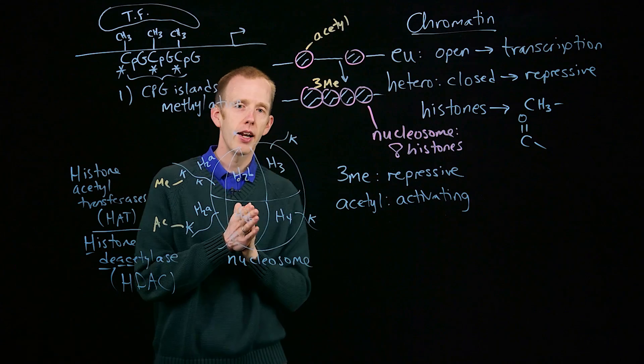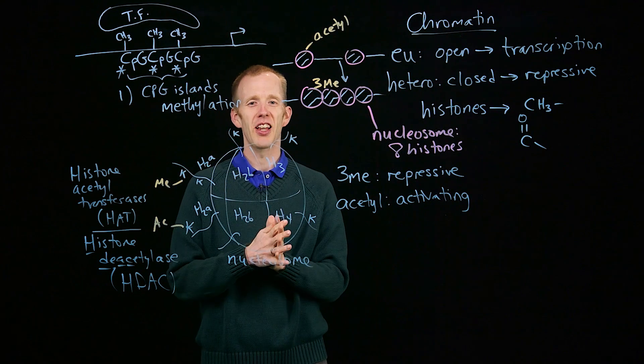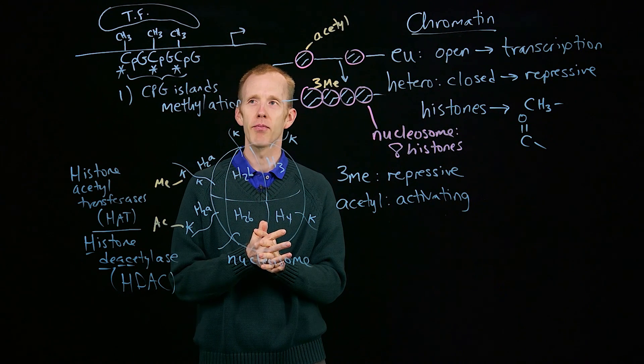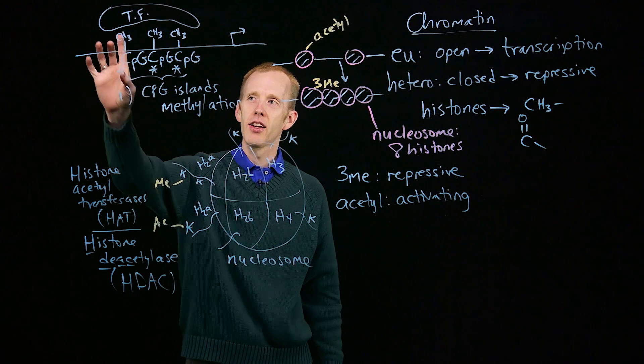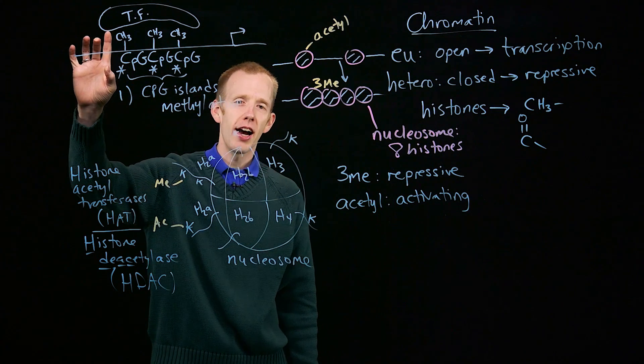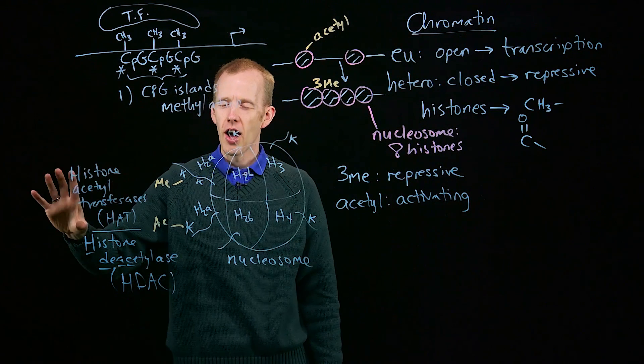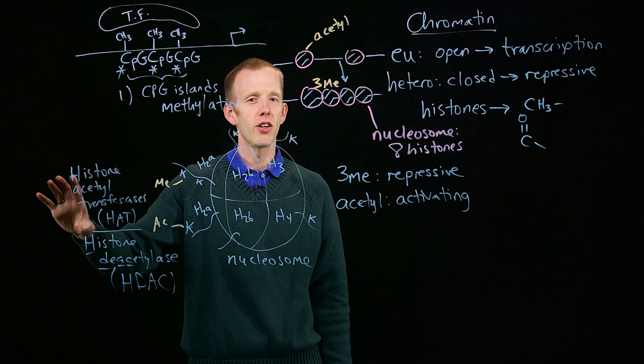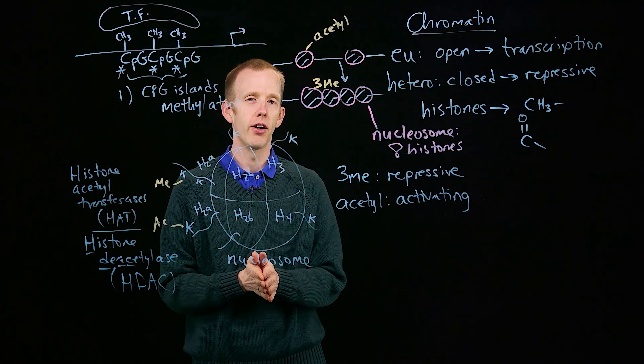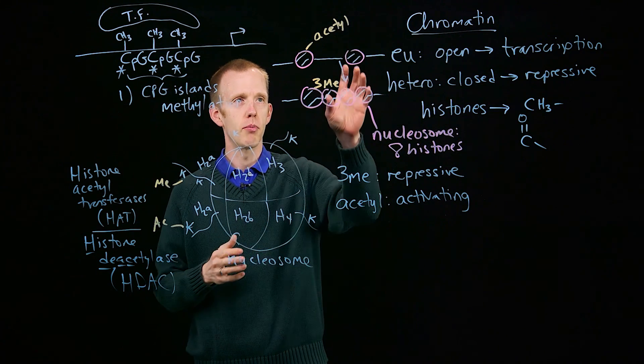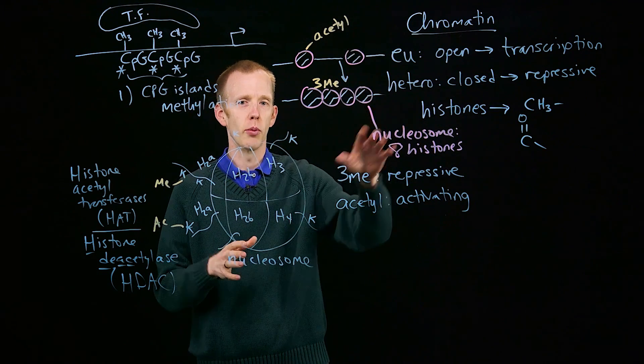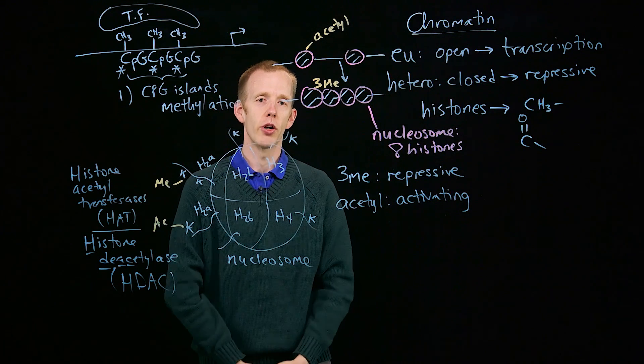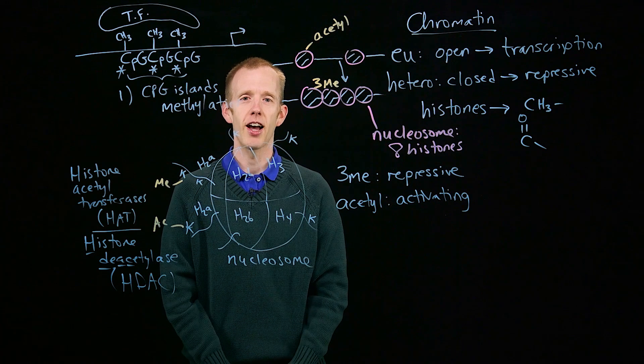So one thing that I'd like you to think about for next class is what would happen if you had CPG island methylation of the histone acetyltransferase gene? What would that do globally on the chromosomes in a cell to gene expression? Would it be euchromatin or heterochromatin? Would it be generally on or generally off? And we'll talk about that in class.